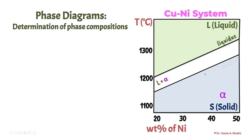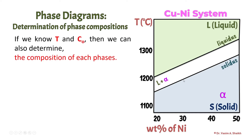This is the liquidus line and this is the solidus line. Above the liquidus line, the entire phase is liquid phase. Below the solidus line, the entire phase is solid phase. So, if we want to determine the phase composition present, we need to know the temperature and the original composition, and then we can easily determine what is the composition of each phase. Composition means the weight percent of nickel and weight percent of copper — the distribution of weight percentage at that particular temperature and composition.